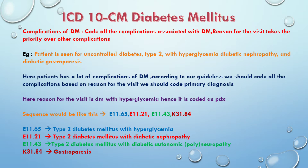Let's discuss an example. A patient is seen for uncontrolled diabetes type 2 with hyperglycemia, diabetic nephropathy, and diabetic gastroparesis. The patient has three types of diabetic complications. The first complication is uncontrolled diabetes with hyperglycemia.